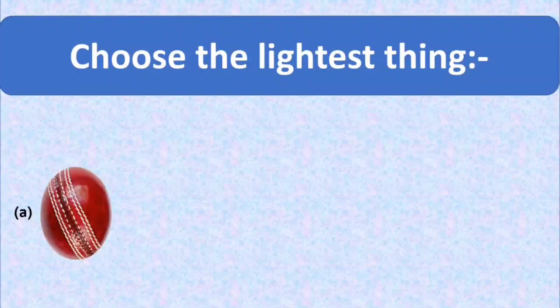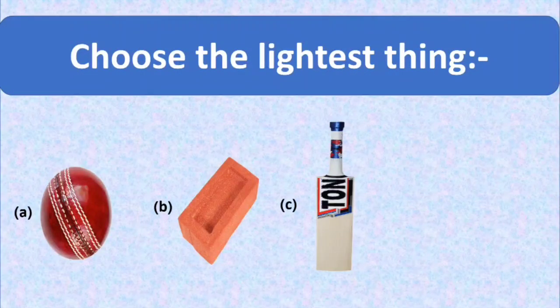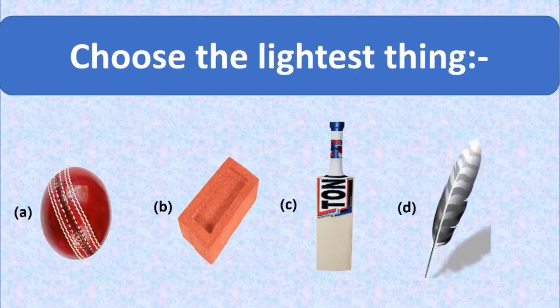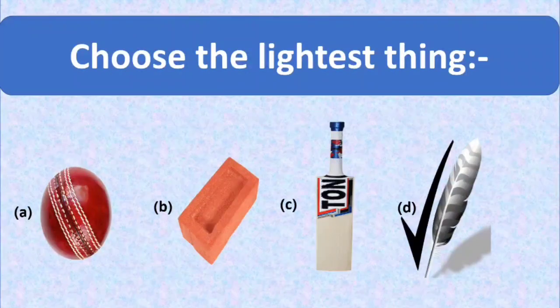Fourth question for today's lesson is, which one is the lightest? Here we have four options. Option A is a ball. Option B is a brick. Option C is a cricket bat, and option D is a feather. You know kids, the feather is the lightest thing. It has very less weight. So option D, feather is the right option and we put a tick mark there.